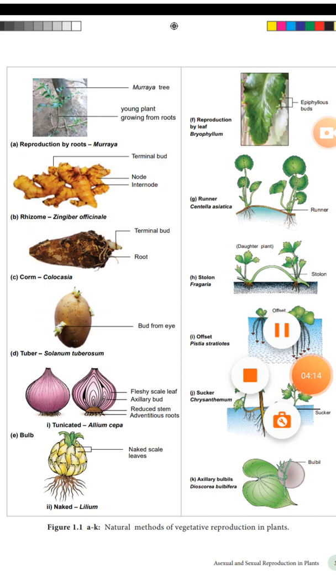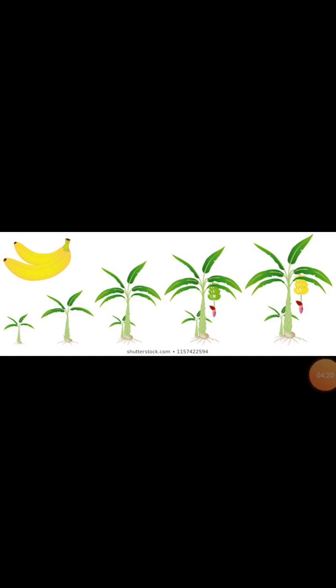These are all ways they develop through underground stem modification in vegetative propagation. For example, Musa paradisiaca - the plant has a rhizome. The old rhizome develops into a new plant of Musa, gradually developing into an entirely new organism of Musa paradisiaca. This is called cultivation by the natural method of vegetative reproduction by stem.